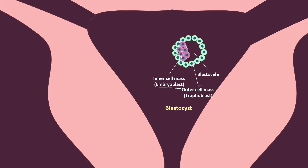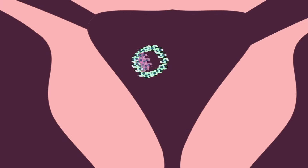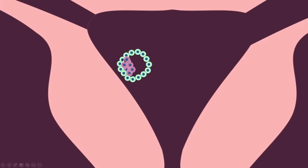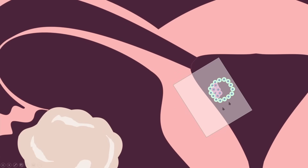These trophoblasts form the major part of the fetal placenta. The placenta has two parts — the fetal part and the maternal part — which we will discuss in detail later. The inner cell mass and outer cell mass then implant into the endometrium of the mother.